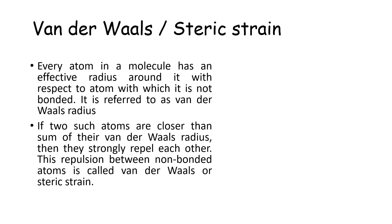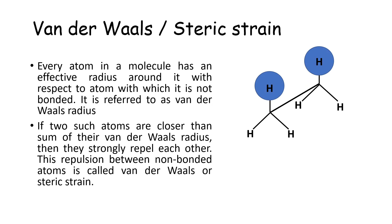First is Van der Waals or steric strain. Every atom in a molecule has an effective radius around it with respect to atoms with which it is not bonded. In the Sawhorse projection of ethane shown here, two non-bonded hydrogens are highlighted by blue circles representing their van der Waals radii. These are non-bonded atoms on adjacent carbon atoms. If two such atoms come very close — closer than the sum of their van der Waals radii — they strongly repel each other. This repulsion between non-bonded atoms is called Van der Waals or steric strain.